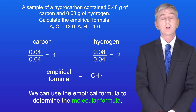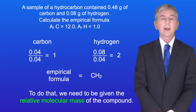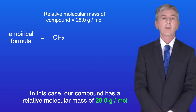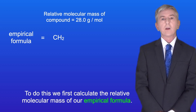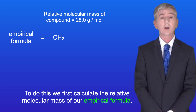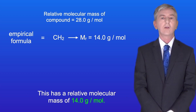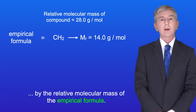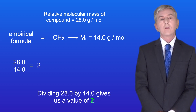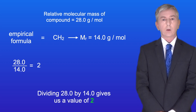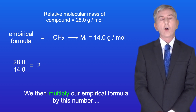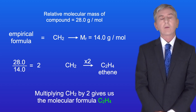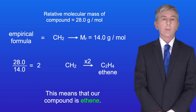We can use the empirical formula to determine the molecular formula, but to do that we need to be given the relative molecular mass of the compound. In this case, our compound has a relative molecular mass of 28.0 grams per mole. First, we calculate the relative molecular mass of our empirical formula, which is 14.0 grams per mole. Next, we divide 28.0 by 14.0, giving us a value of 2. We then multiply our empirical formula CH2 by 2 to get the molecular formula C2H4, meaning our compound is ethene.